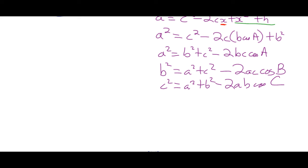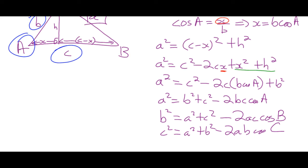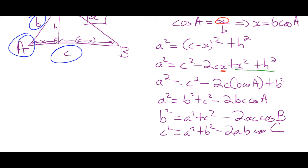In sine law, we need to know the angle and the side opposite that angle. So when you're deciding what to use: if you know two sides and the included angle, use cosine law. If you have a known pair, use the sine law. You can also solve for an angle using the cosine law.